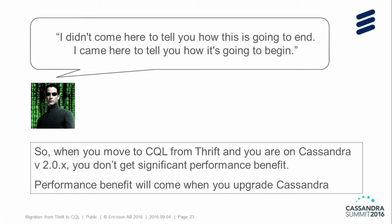When you move from Thrift to SQL and you are still on Cassandra 2.0, the performance benefit is not going to be significant. Your journey is going to be two-step — like a movie with a sequel. You did this elaborate activity of changing your data points and application, and you didn't get the performance you expected. The performance benefit will come when you upgrade your Cassandra version, not if you stay on 2.0.